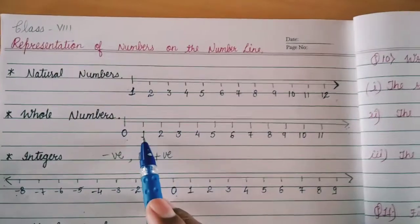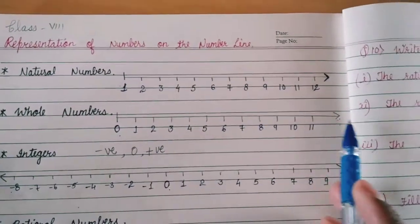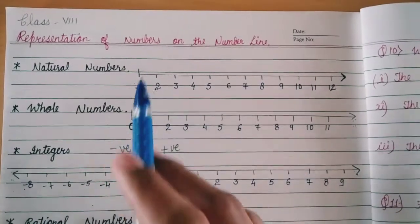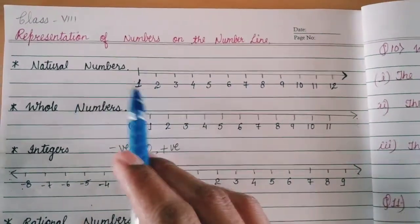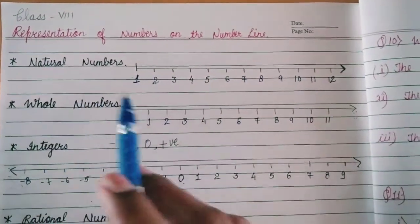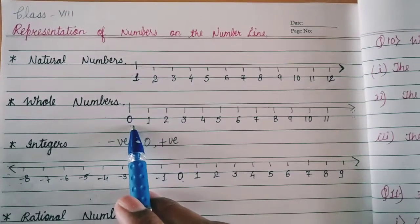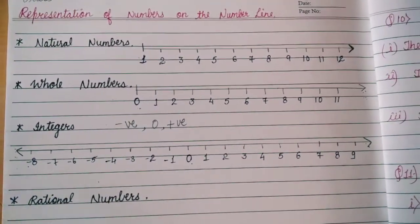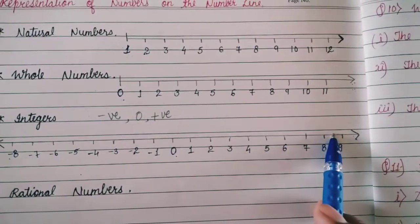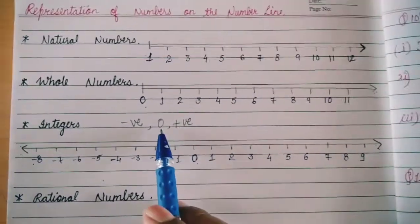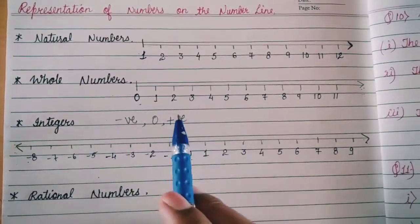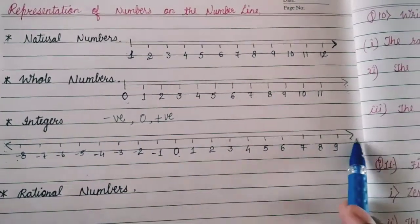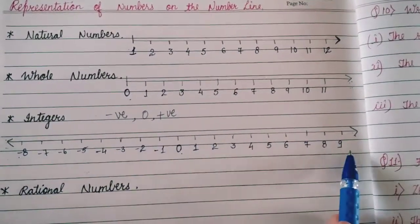But in the whole number set it only increases or decreases in the right hand side, because natural numbers begin with 1 and whole numbers begin with 0. But integers do not begin or end anywhere — it is the set of 0, positive numbers, and negative numbers. So here we have arrows on both sides.